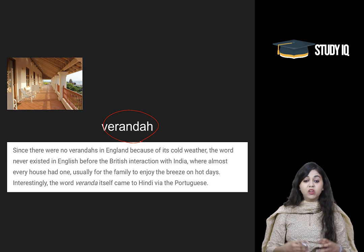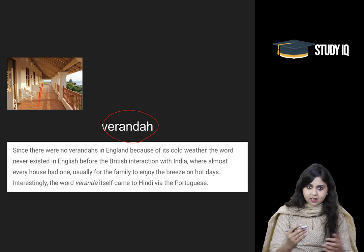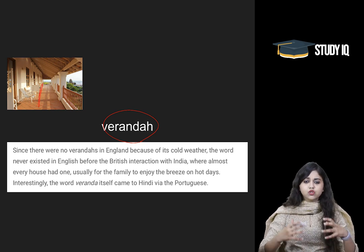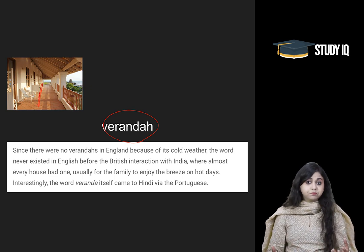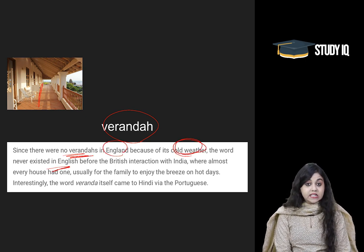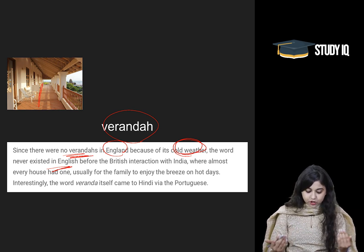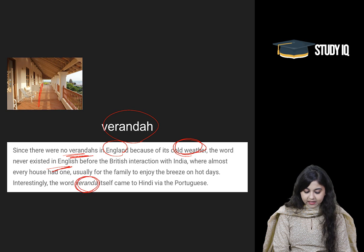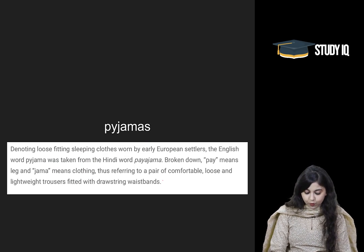'Veranda' — Britishers, because it was very cold in the United Kingdom, did not have an outdoor space attached to their homes, so the word veranda never existed for them. However, through interaction with Indians, they encountered this Indian word 'veranda', which became part of the English language — referring to a covered outdoor area attached to a house.